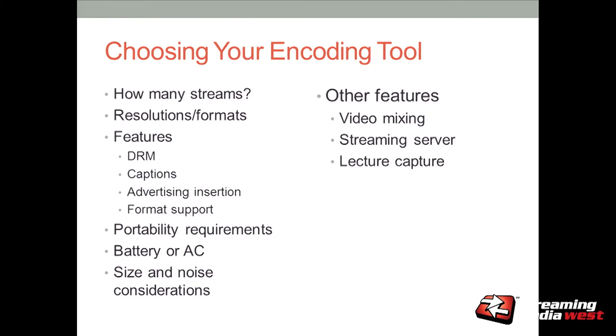Now, choosing your encoding tool. You're going to have a bunch of different factors to consider, whether you're looking at a big iron hardware encoder or a software encoder. How many streams do you need to produce? What are the resolutions and formats? What are the features — DRM, captions, advertising assertion? Where are you going to pick those up — at the encoding side with a big iron encoder, or at the service provider level? You need to consider portability requirements. If you're following somebody with a camera, you probably need an on-camera encoder or a camera with an encoder built in, like Panasonic and JVC have.